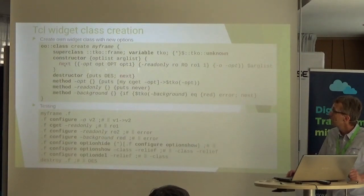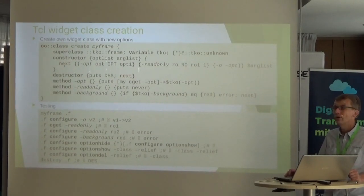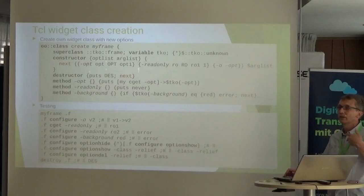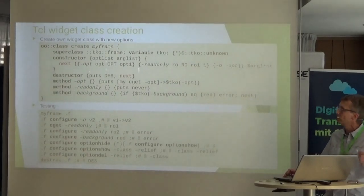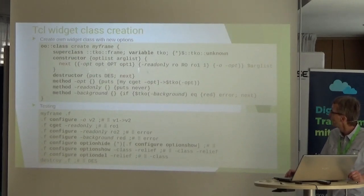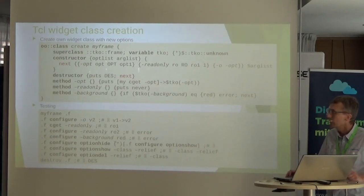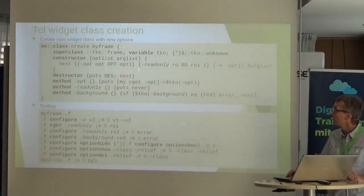To create a widget in TCL, define the subclass, variable, and unknown procedure. Provide a constructor with option list and argument list, and call the next constructor to reach the TKO widget constructor. The option list is first, and you can provide your own option list. Then define option methods. When tested, the expected results are produced — try it on the provided binaries.